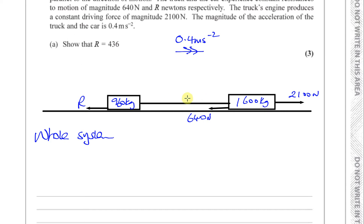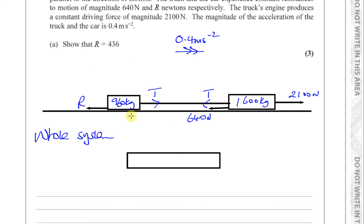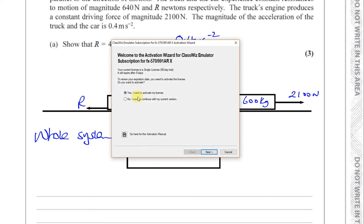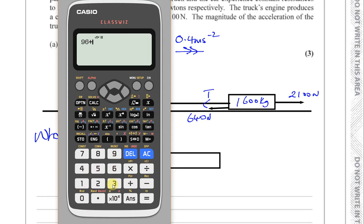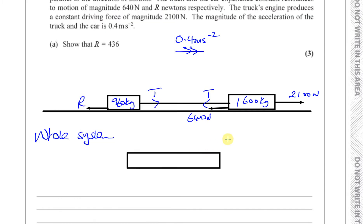What we need to do here is to take the system as a whole. The tow bar means the truck is pulling the car, and the car is pulling back on the truck — there's tension in the tow bar. But if we look at the system as a whole, we don't need to worry about these tensions. We can take it as one whole big particle. The total mass is 960 plus 1,600, which gives you 2,560 kilograms.